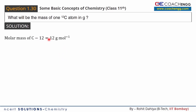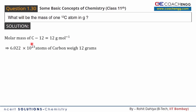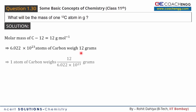The molar mass of carbon-12 is 12 grams per mole. We know that the molar mass corresponds to Avogadro's number of particles — 6.022×10²³ atoms of carbon weigh 12 grams. Using the unitary method: if these atoms weigh 12 grams, then one atom will weigh 12 divided by 6.022×10²³ grams.